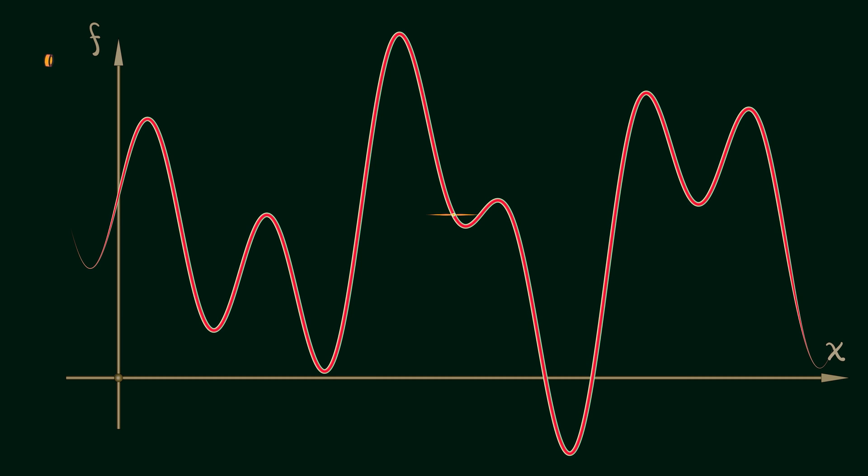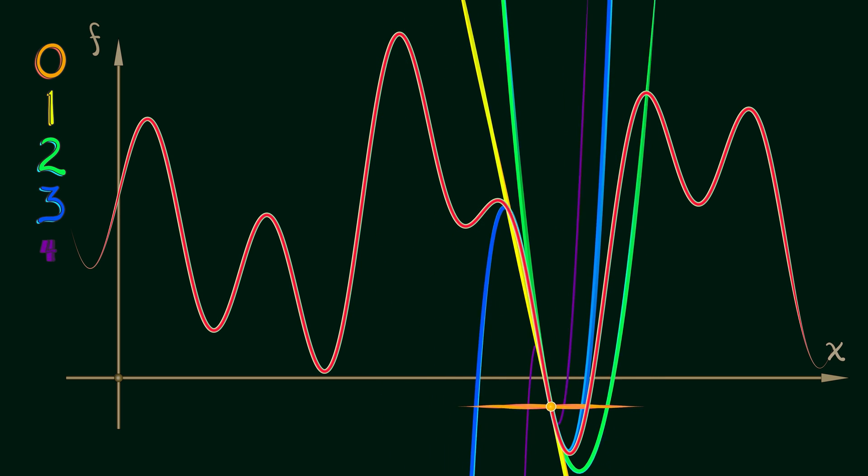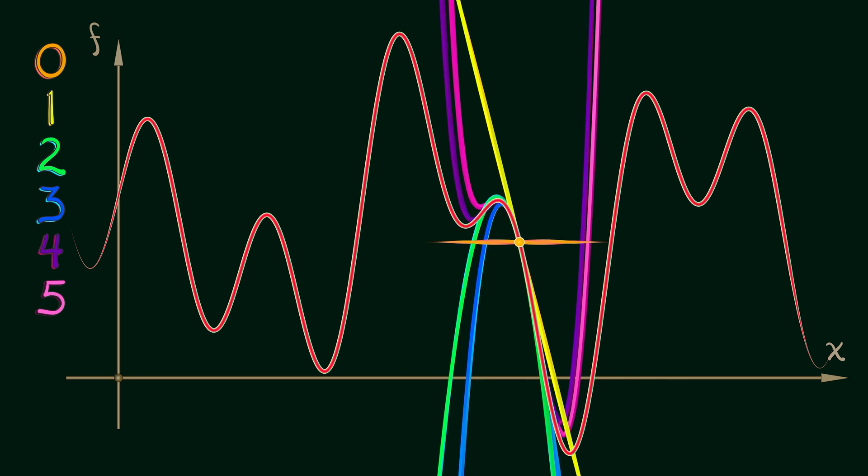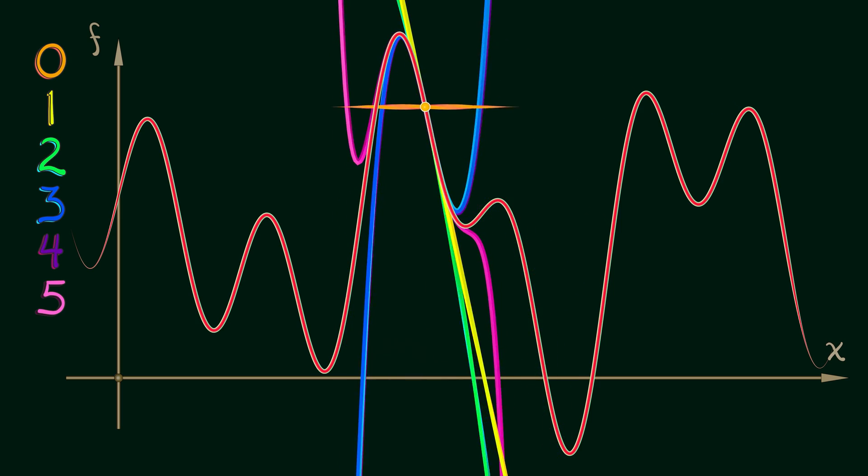of course, if we look at the zeroth and first order terms, we get the tangent line. And you're used to that from when you first learned about derivatives. When we add the second order term, we get the best quadratic approximation to the function about the expansion point. When we add the third order terms, we get the best cubic approximation to the function at the tangent point, and on and on and on.